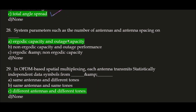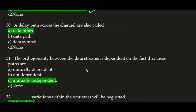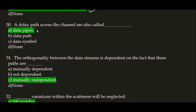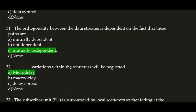Next question: system parameters such as the number of antennas and antenna spacing — correct answer is option A — affect ergodic capacity and outage capacity. Next question: in OFDM-based spatial multiplexing, each antenna transmits statistically independent data symbols from different antennas and different tones; the correct answer is option C, different antennas and different tones. Next question: delay paths across the channel are also called data pipes — option A is correct. The orthogonality between the data streams is dependent on the fact that these paths are mutually independent; the correct answer is option C.